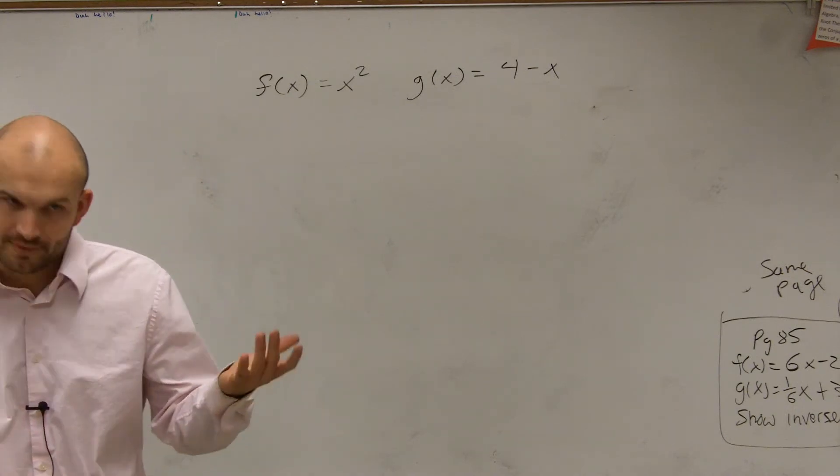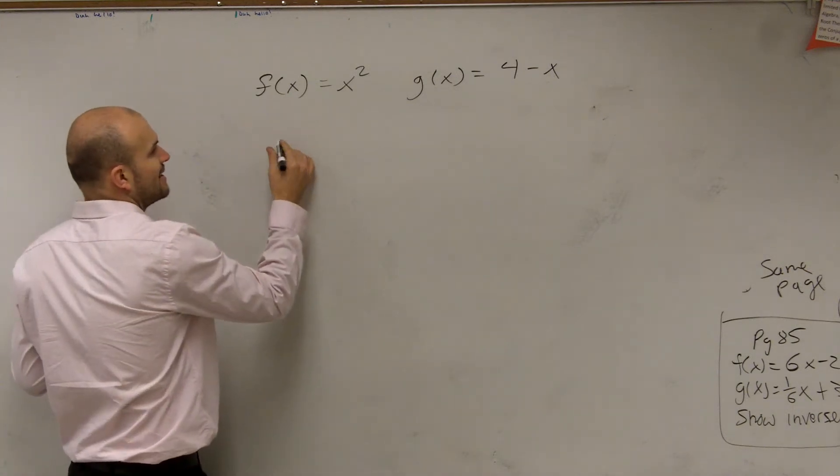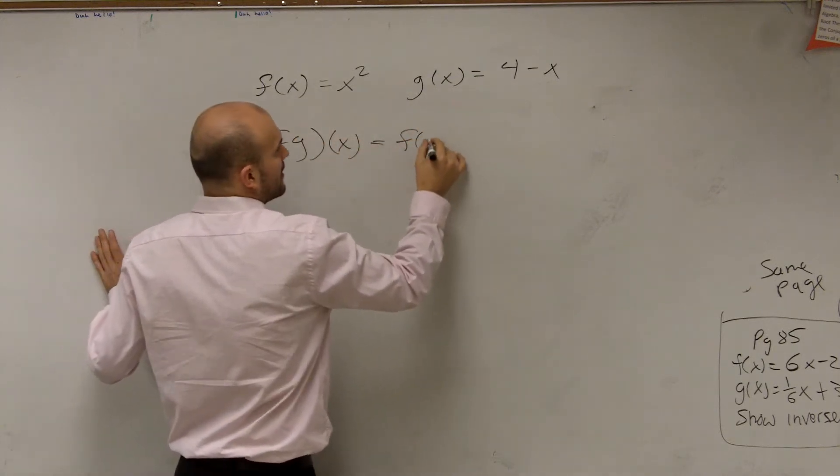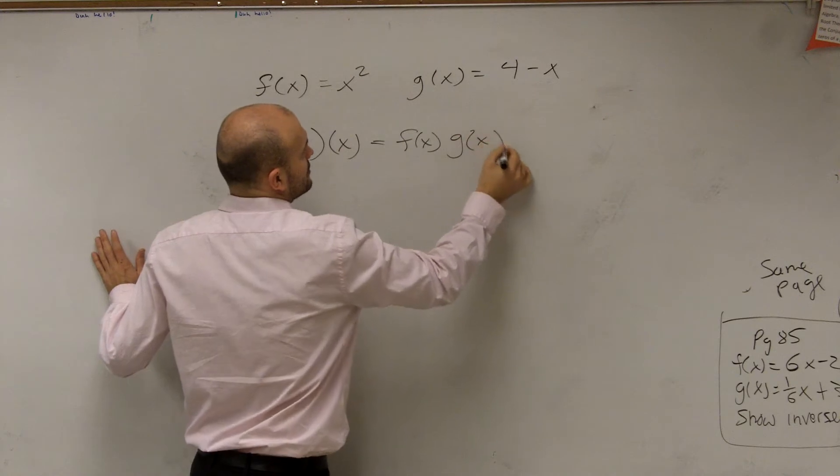Now what we need to do is multiplication. So how we write that is we have f times g of x. Well, that's going to equal f of x times g of x.